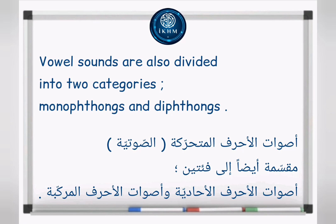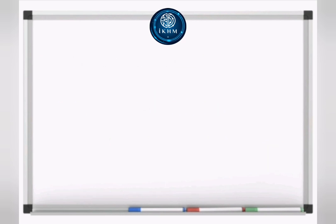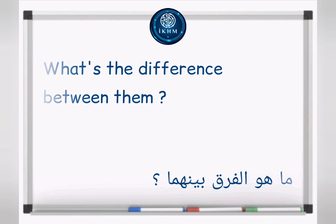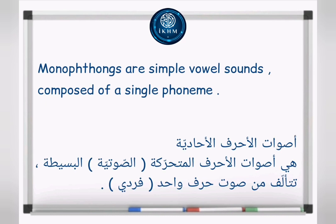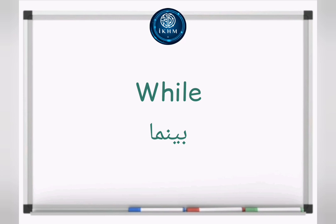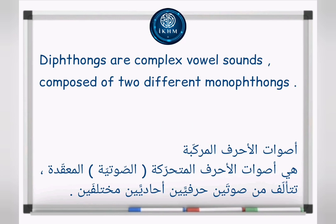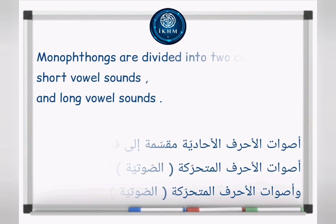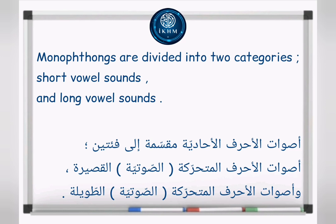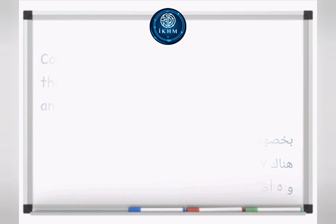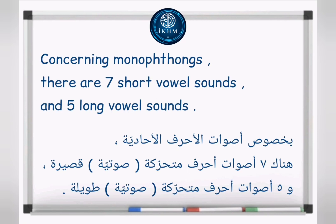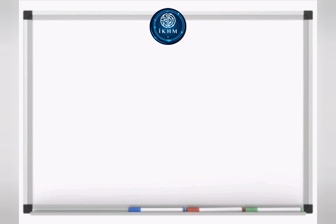Those two categories are monophthongs and diphthongs. What's the difference? Monophthongs are simple vowel sounds composed of a single phoneme, while diphthongs are complex vowel sounds composed of two different monophthongs. Monophthongs are divided into short vowel sounds and long vowel sounds — there are seven short vowel sounds and five long vowel sounds.